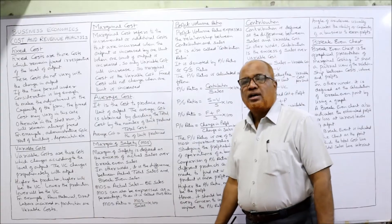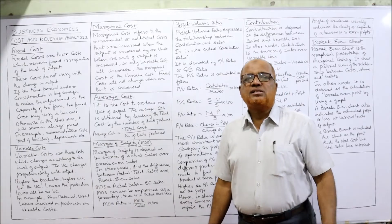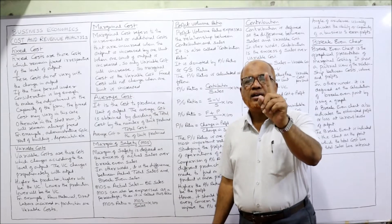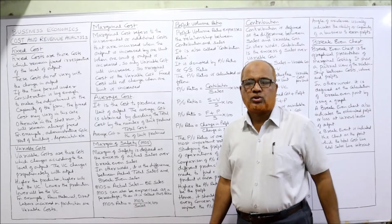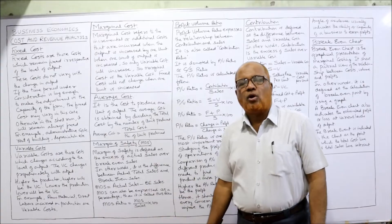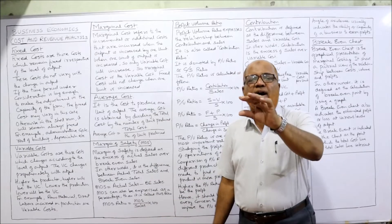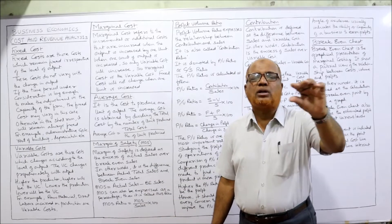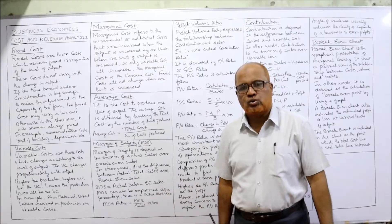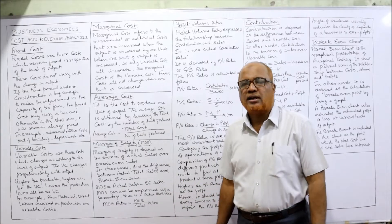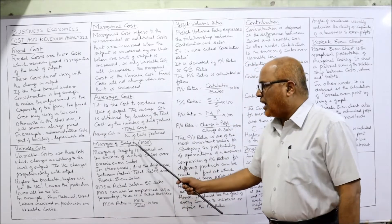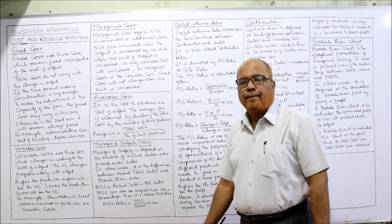Average cost is the cost incurred in making one unit of output. Average cost is obtained by dividing total cost by the number of units produced.